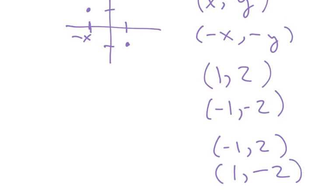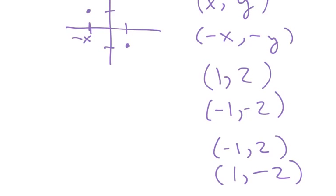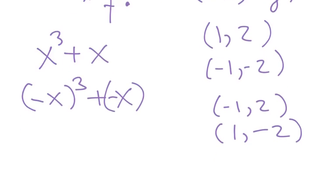So what essentially is going on then, what that means, is let's say I give you something like x^3 + x. So if I make my x values negative, what essentially occurs is that everything changes its value.